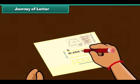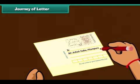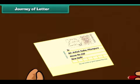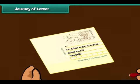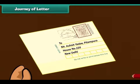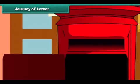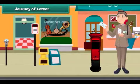After you finish writing the letter, you write the name and address of the person to whom it is to be delivered on the top. In case of an envelope, you need to paste a postage stamp of the correct amount. You then drop the letter in a letter box, from where the postman collects all the mail and takes it to the post office.